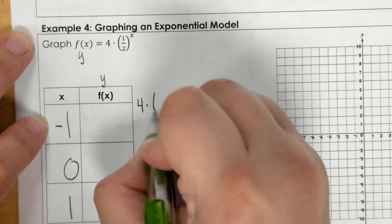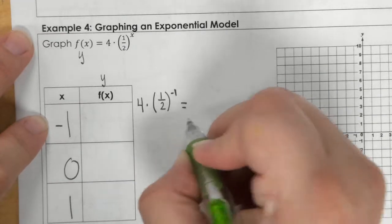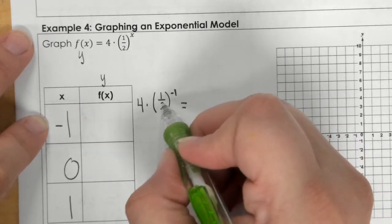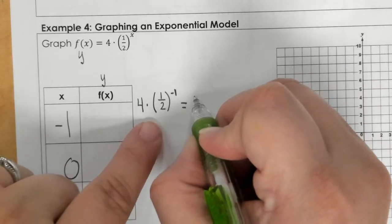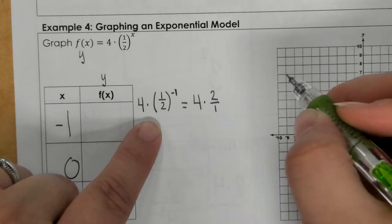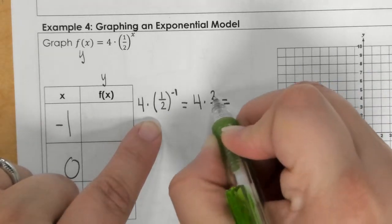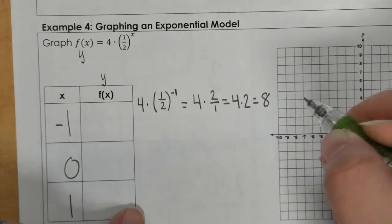So, 4 times 1 half to the negative 1 power. What happens is this negative 1 actually flips this whole fraction. So it would look like this. And then, 2 divided by 1 is just 2, so 4 times 2 is 8.